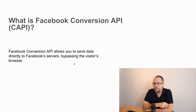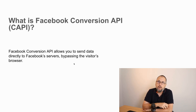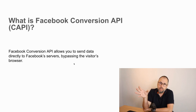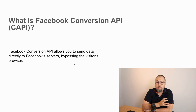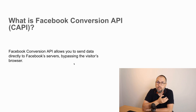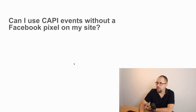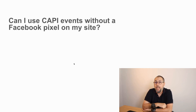What is Conversion API? Conversion API allows you to send data directly to Facebook's servers, bypassing the visitor's browser. Your server communicates directly with Facebook's servers and sends Conversion API events. The main advantage is that you will be able to overcome limitations in the browser like privacy settings or ad blockers. This is why we have Conversion API.